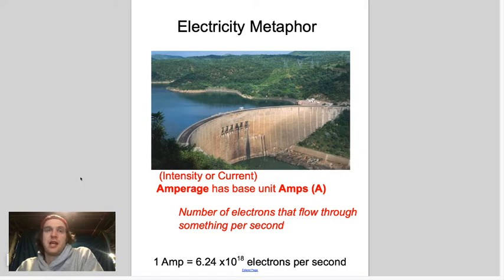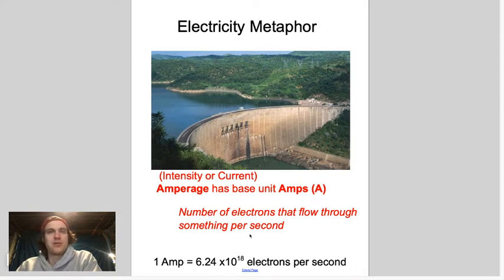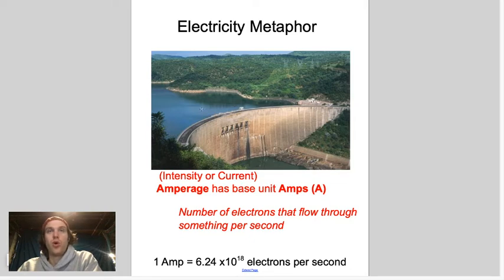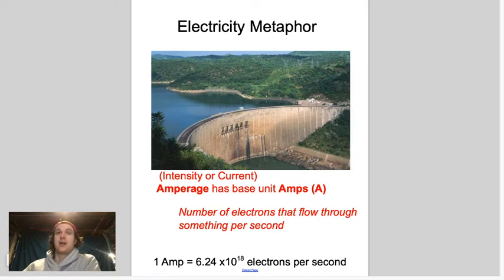The next one is amperage, also called intensity or current. Base unit is amps, represented by the letter A. It is the number of electrons that flow through something per second — basically like how fast something is going through the hole in the dam. One amp is 6.24 × 10¹⁸ electrons per second traveling through.